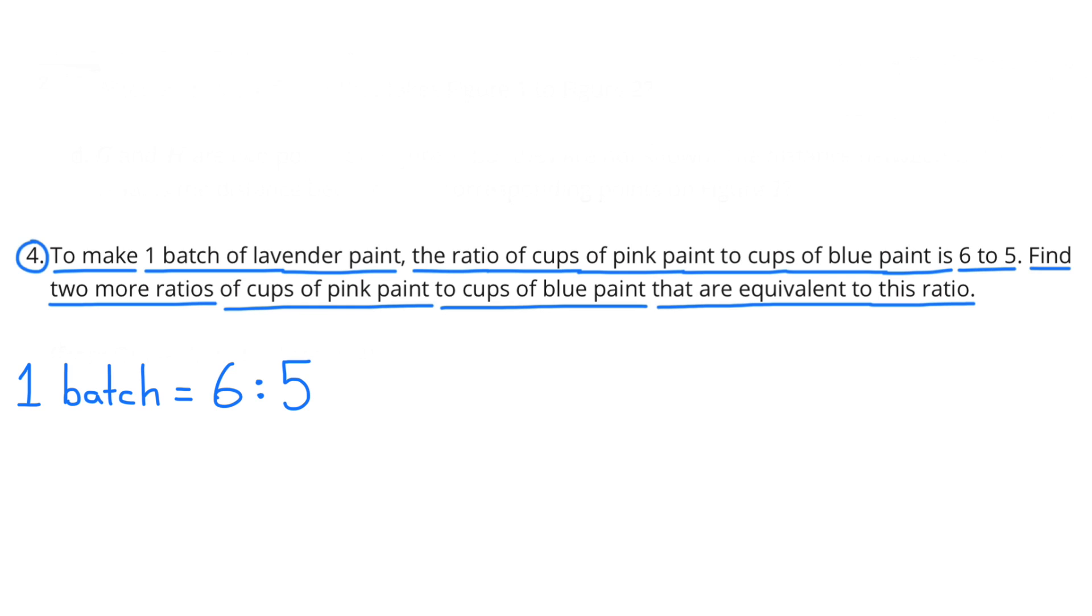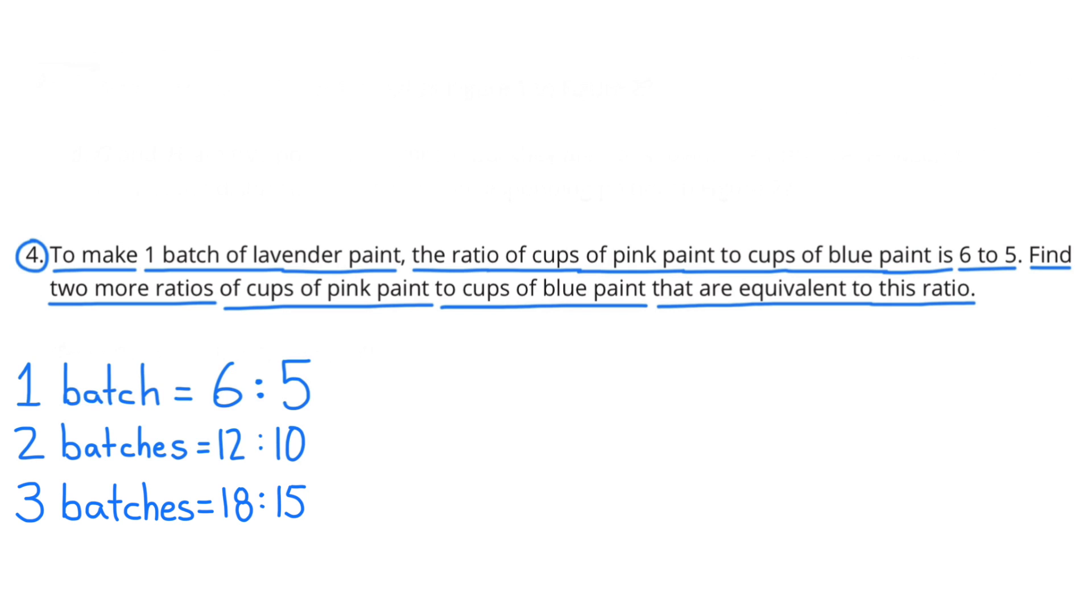Since one batch has a ratio of 6 to 5, two batches would double that. So two batches would have a ratio of 12 to 10. And three batches would be 3 times greater than one batch. So three batches would have a ratio of 18 to 15.